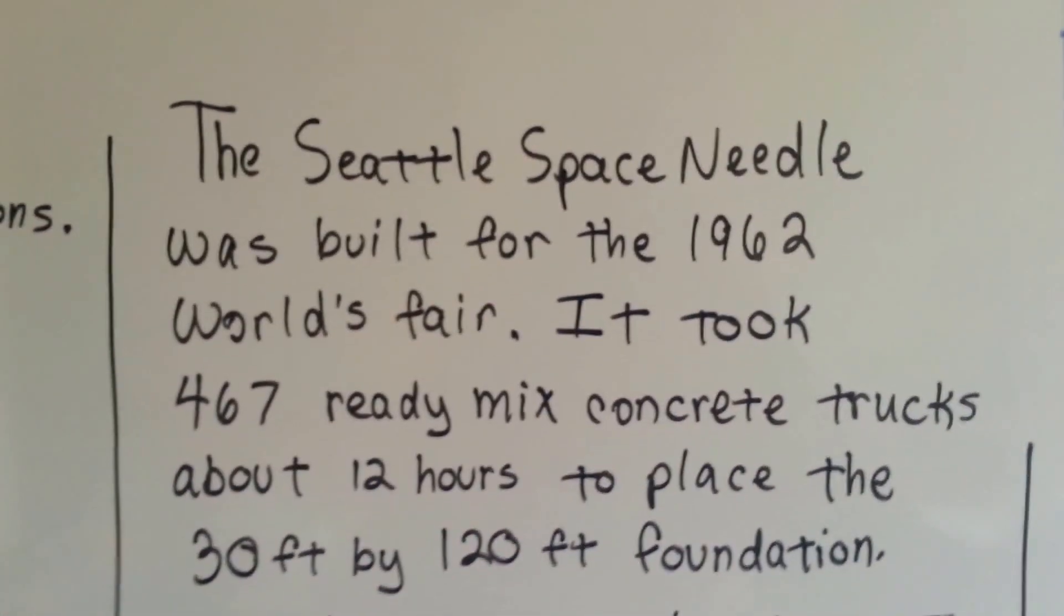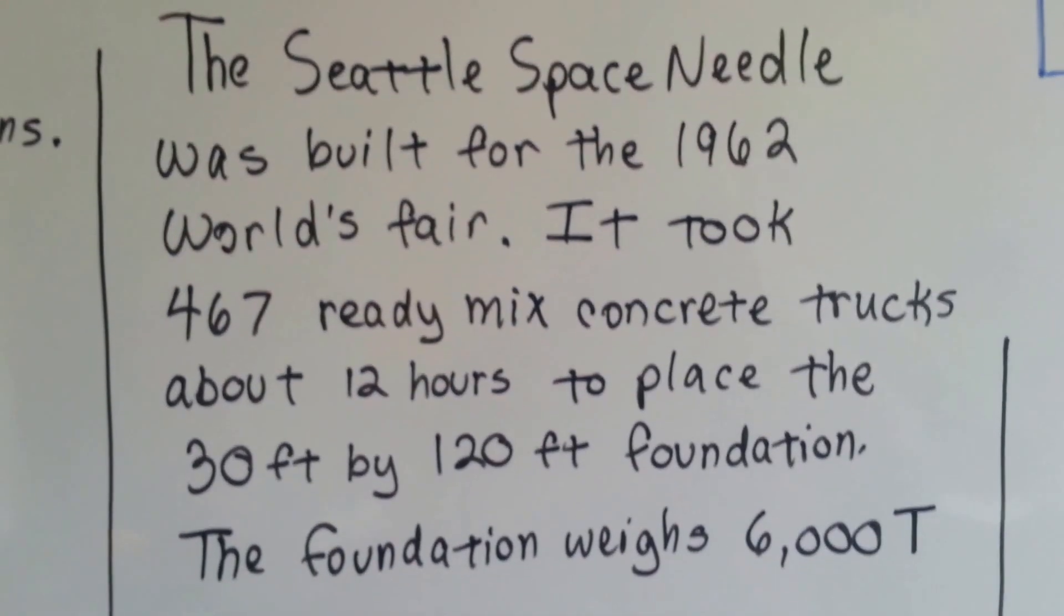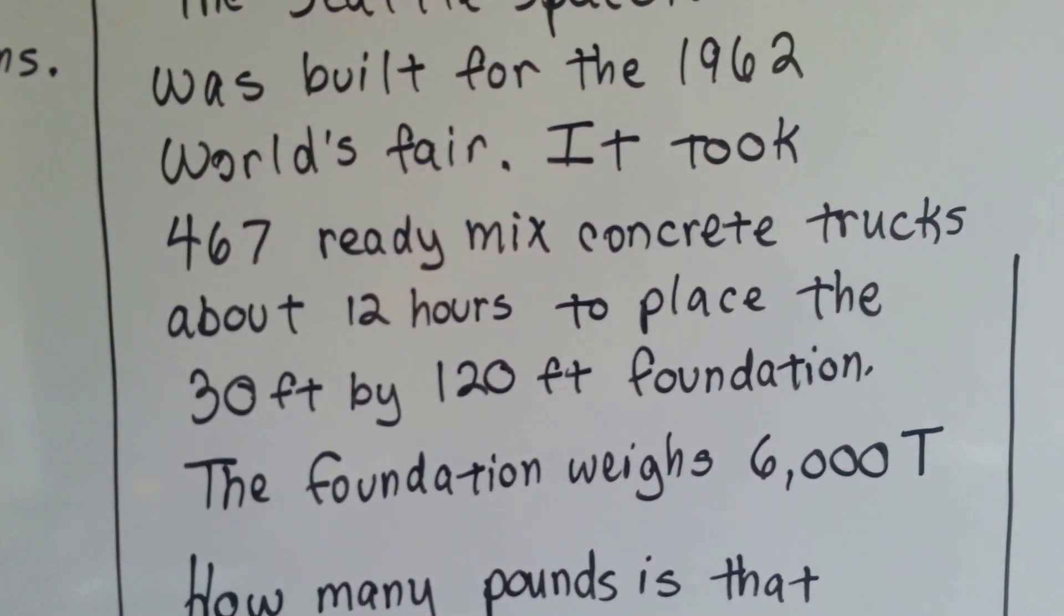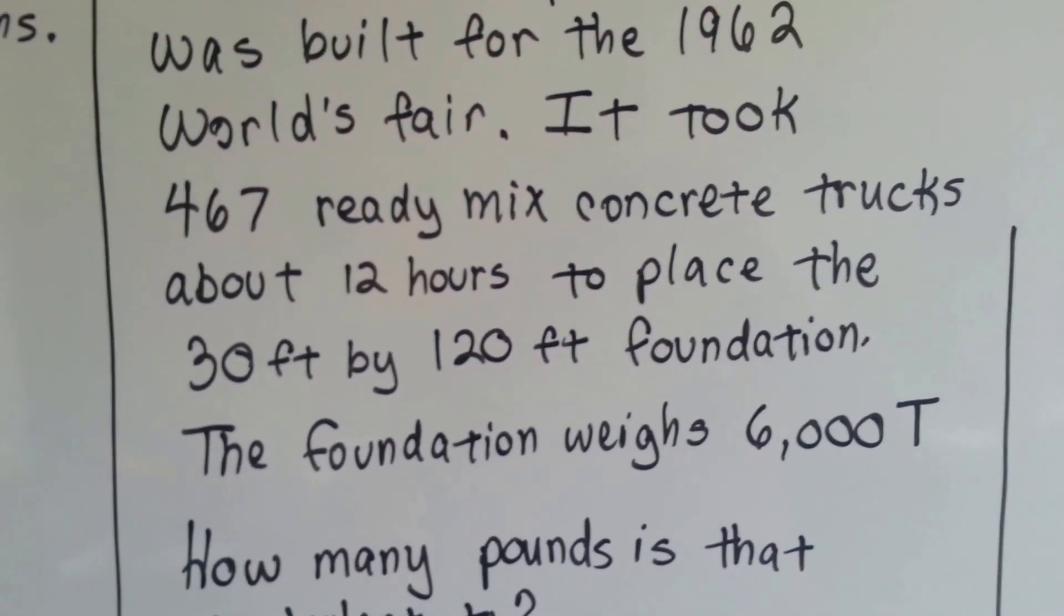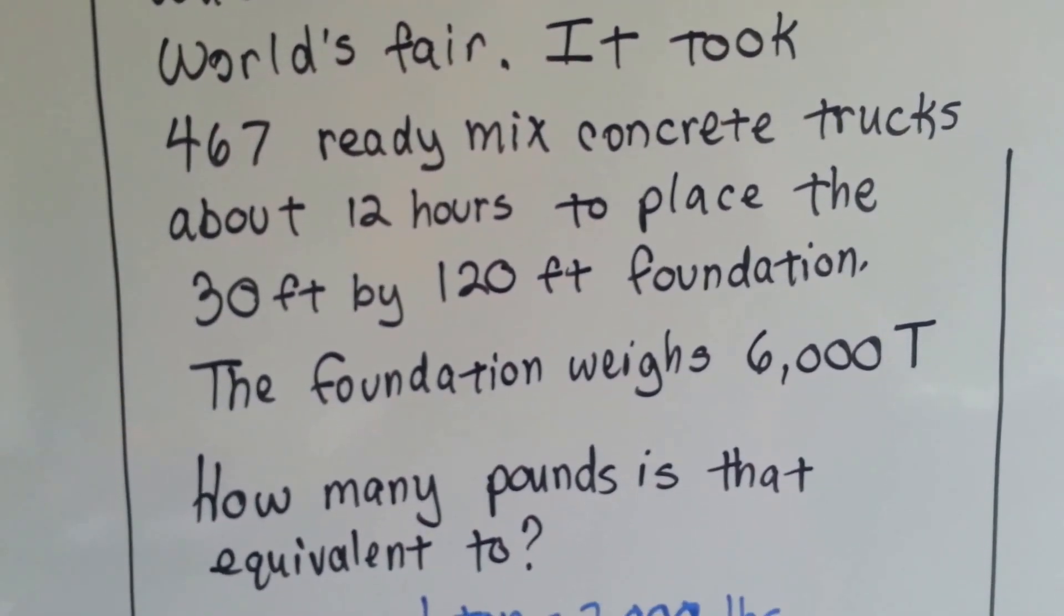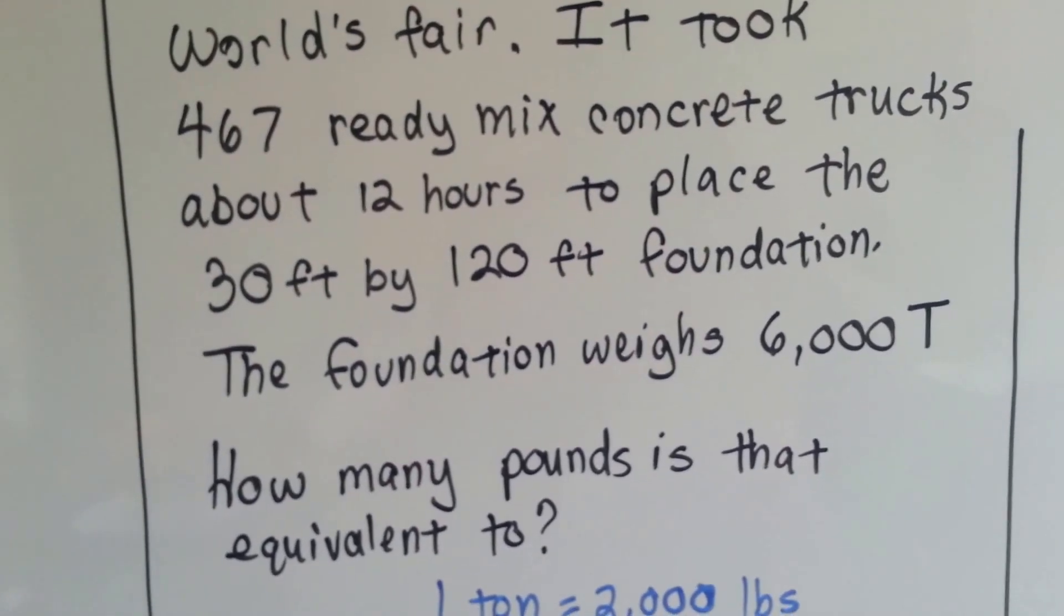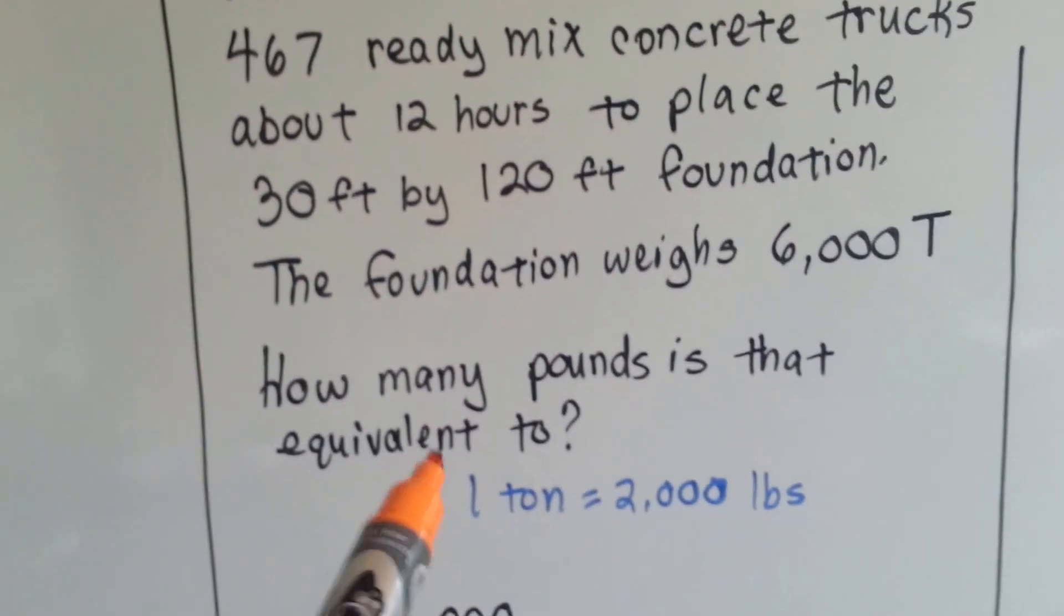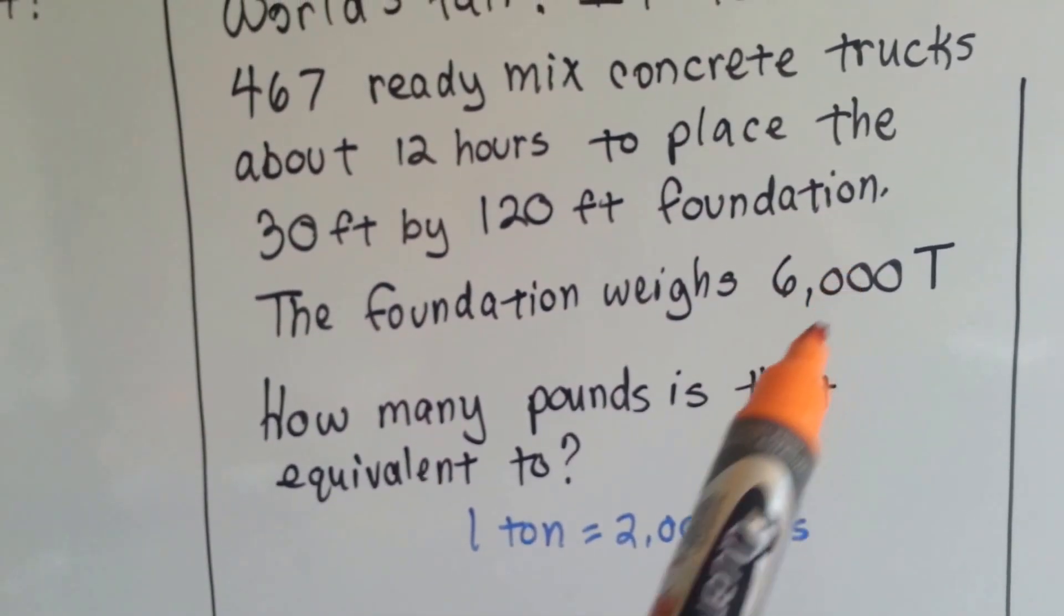The Seattle Space Needle was built for the 1962 World's Fair. It took 467 ready-mix concrete trucks, about 12 hours, to place the 30 foot by 120 foot foundation. The foundation weighs 6,000 tons. Not pounds, tons. So how many pounds is that equivalent to? Well, 1 ton is 2,000 pounds, but we've got 6,000 tons.